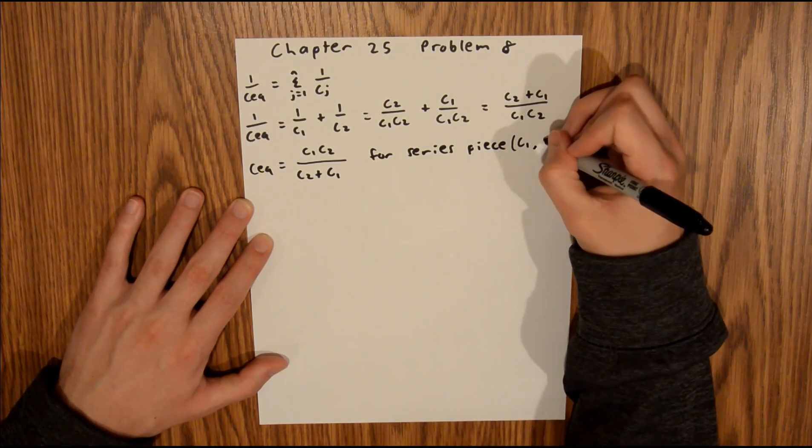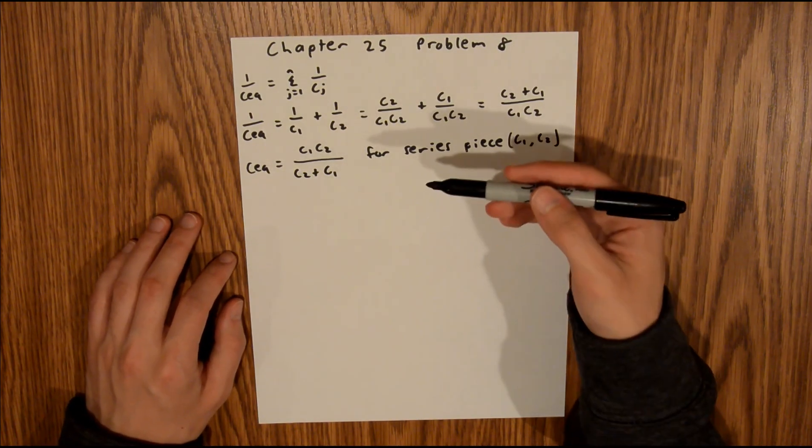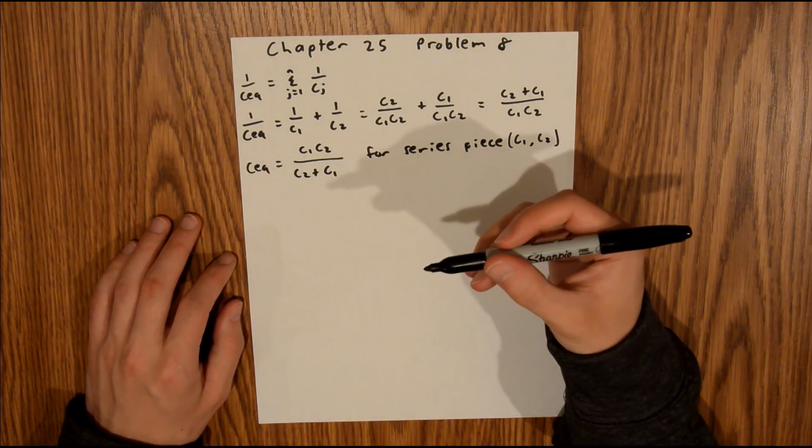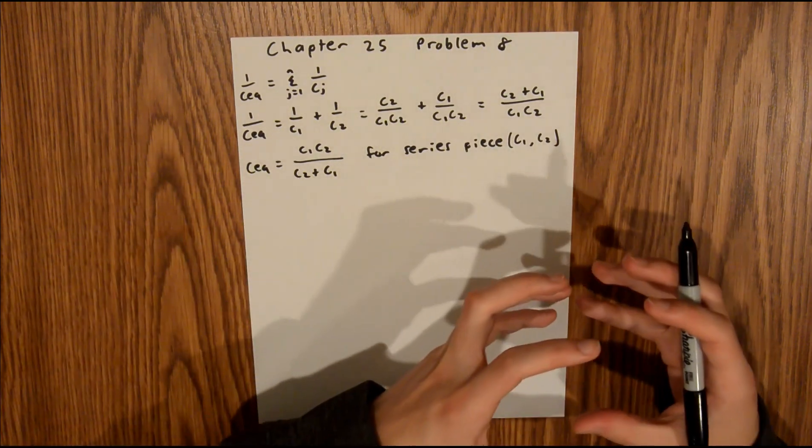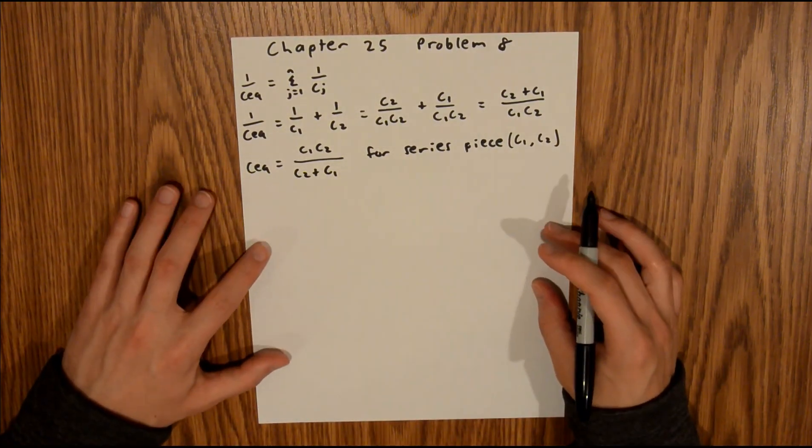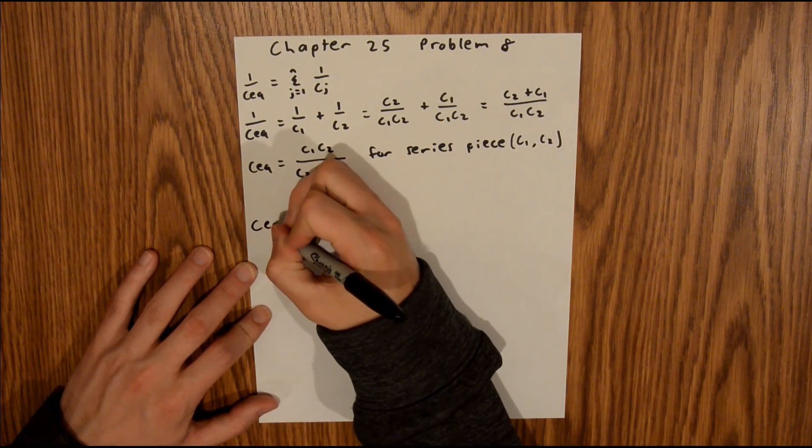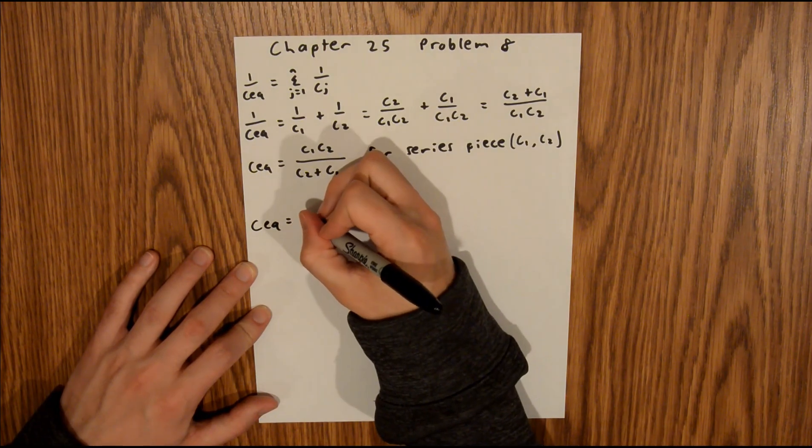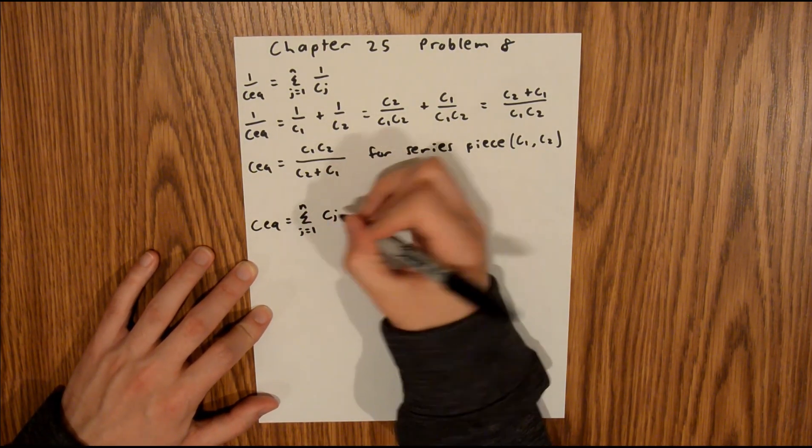So, C1 and C2. Now that we essentially combined capacitor 1 and capacitor 2 into one system, now we can treat that one system in parallel with capacitor 3. Capacitance in parallel is defined as CEQ is equal to the sum of J equals 1 to N of CJ.